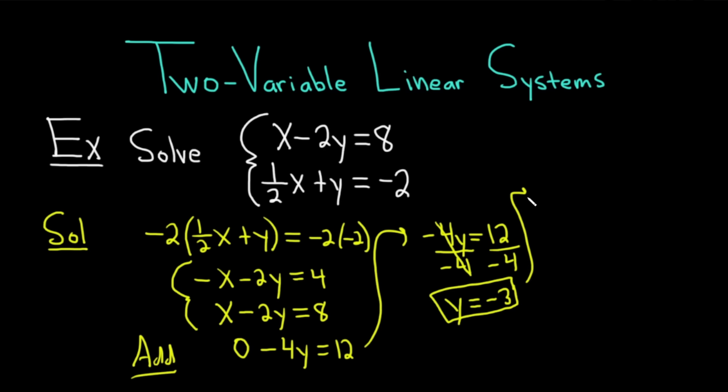So when we do that, we'll get x. Then we have a minus 2. And then we have y. But instead of y, it's negative 3. And this is equal to 8. So we have x, and then minus 2 times minus 3 is plus 6. And this is equal to 8.